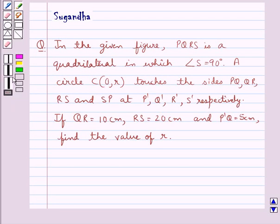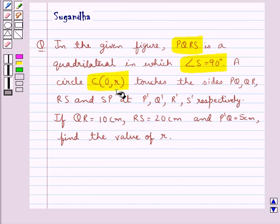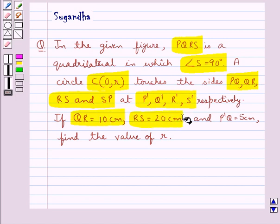Hello and welcome to the session. In this session we discuss the following question: In the given figure, PQRS is a quadrilateral in which angle S is equal to 90 degrees. A circle C with center O and radius R touches the sides PQ, QR, RS and SP at P', Q', R', S' respectively. If QR is equal to 10 cm, RS is equal to 20 cm and P'Q is equal to 5 cm, find the value of R.